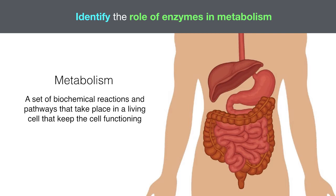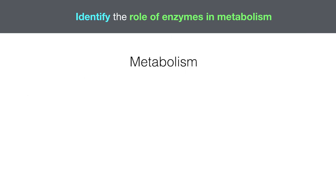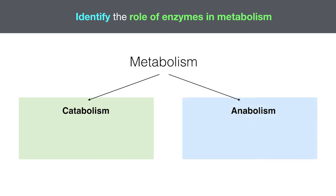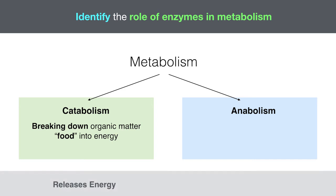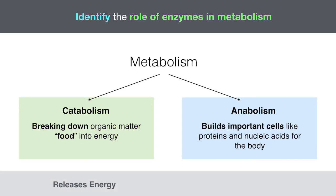To break this down even further, metabolism can be split into two components: catabolism and anabolism. Catabolism is where you break down organic matter or food into energy for the body. Using the energy produced, anabolism builds important cells like proteins and nucleic acids for the body. Needless to say, metabolism is an extremely important process for our bodies to keep functioning like a well-oiled machine.